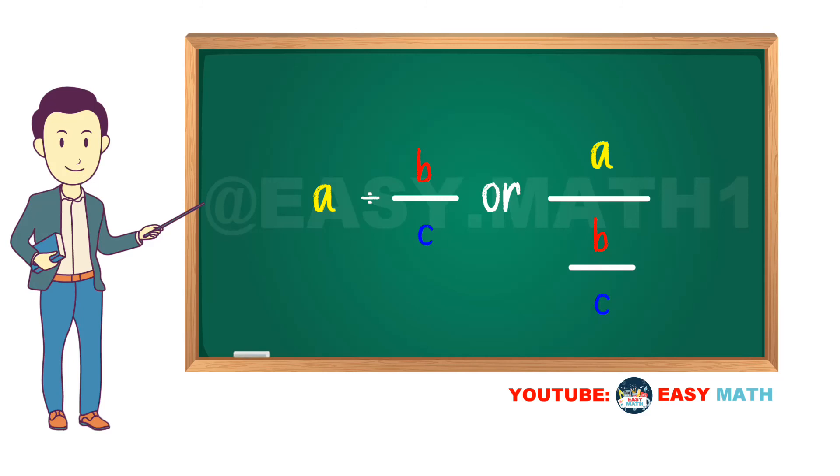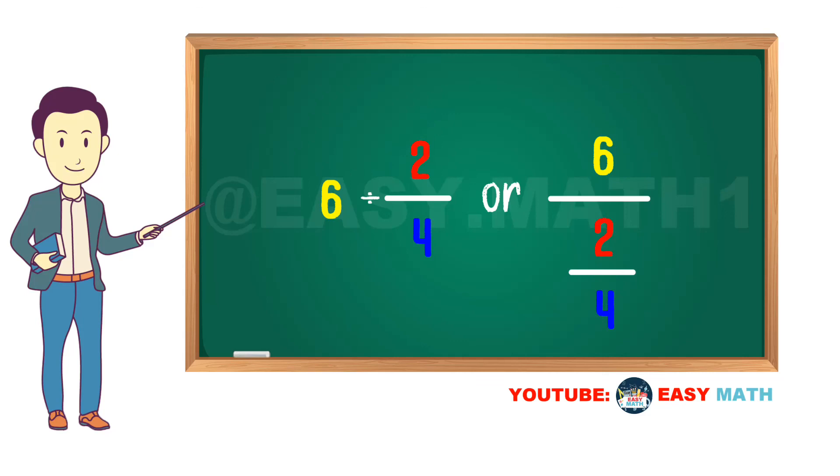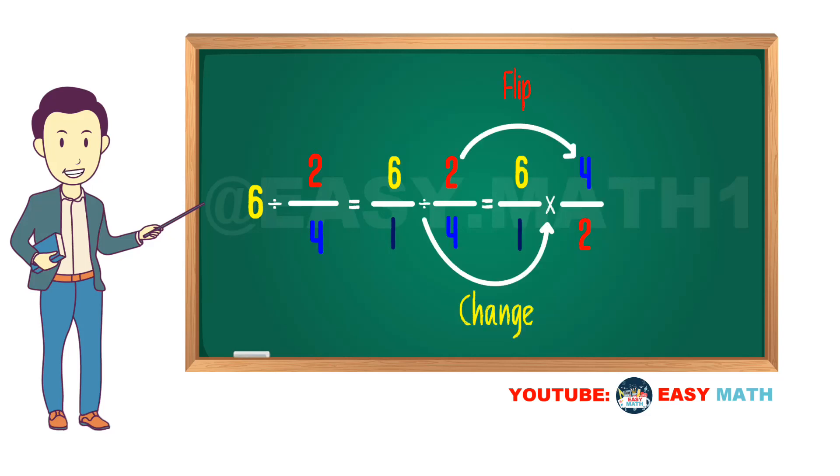Rule number three: A divided by B over C equals A over 1 divided by B over C equals A over 1 times C over B equals AC over B. For example, 6 divided by 2 over 4 equals 6 over 1 divided by 2 over 4 equals 6 over 1 times 4 over 2 equals 24 over 2, which simplifies to 12. I hope this video has been helpful for you.